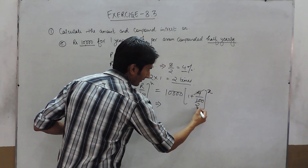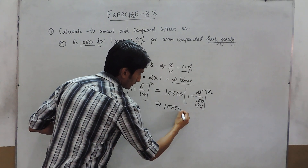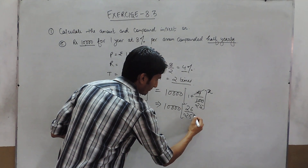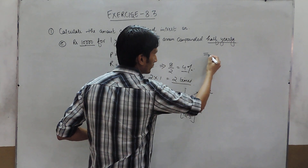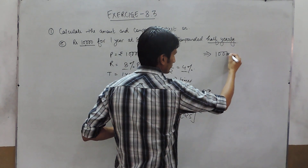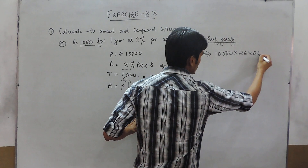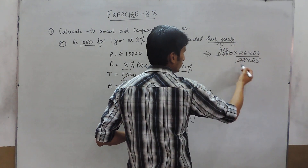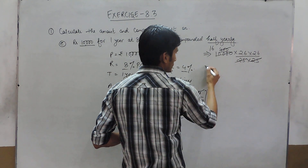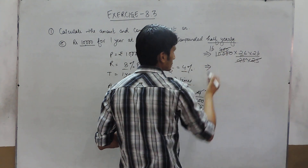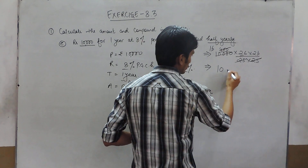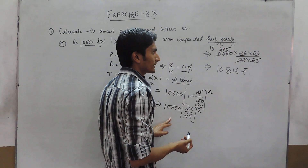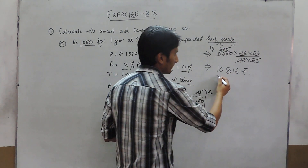Solving this, this can be cancelled out 25 times. So here we take the calculation: it will be 26 upon 25 squared. Solving this, we have 26 into 26 upon 25 into 25. This is 4 times 00, and when cancelled out is 16 times. So 26 multiplied by 26 multiplied by 16 is actually 10,816 rupees.